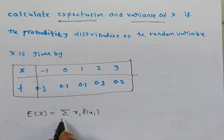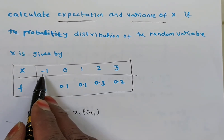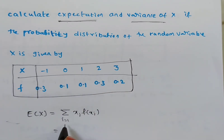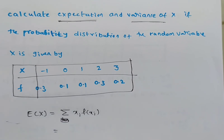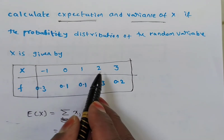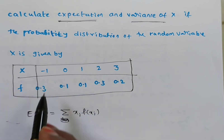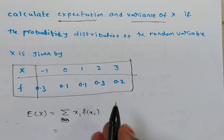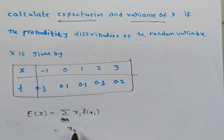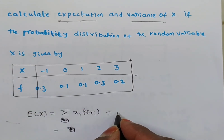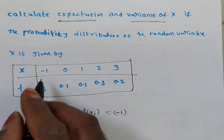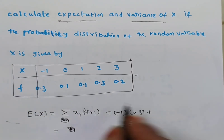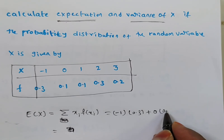Now i runs from the observed values: minus 1, 0, 1, 2, 3. You can treat these as x1, x2, x3, x4, x5, and correspondingly f(x1), f(x2), f(x3), f(x4), f(x5). So xi: x1 is minus 1 into f(x1) which is 0.3, plus x2 is 0 into f(x2) which is 0.1.